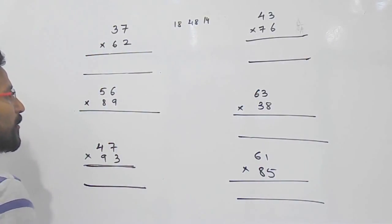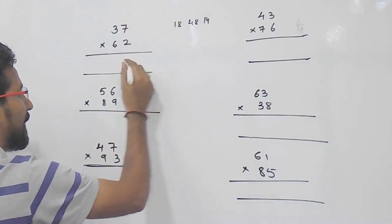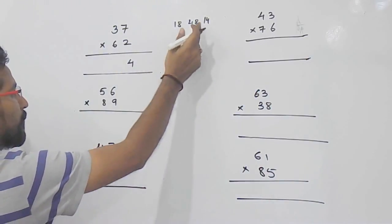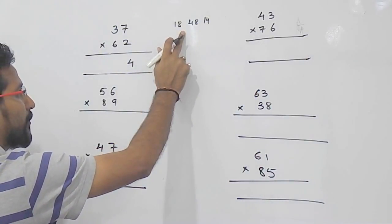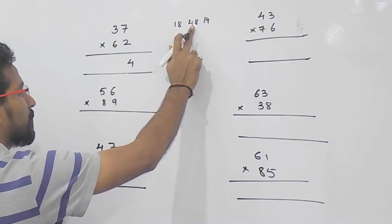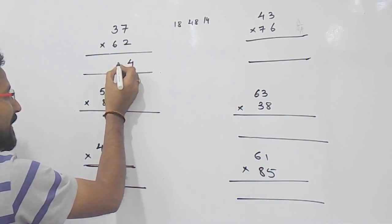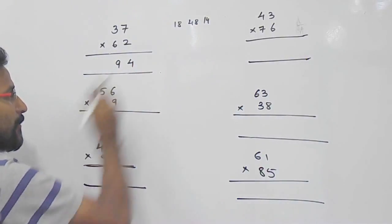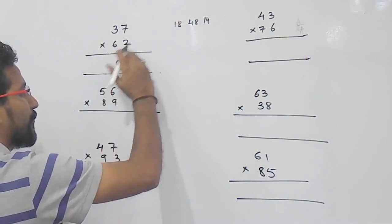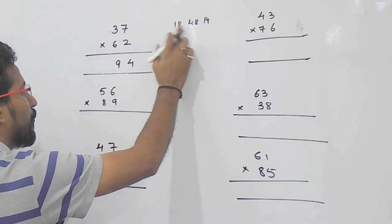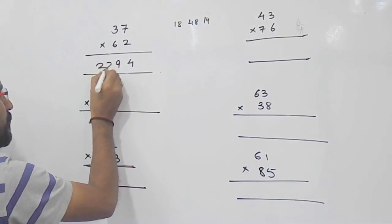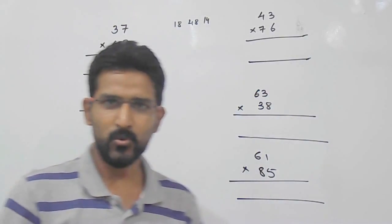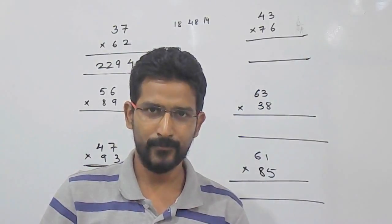Now, what you have to do? Write the unit place value that is 4 here, 1 will be carried forwarded. So, 48 plus 1 that is 49. Again write 9, 4 will be carried forwarded. So, 4 plus 18 that is 22. So, the answer will be 2294.